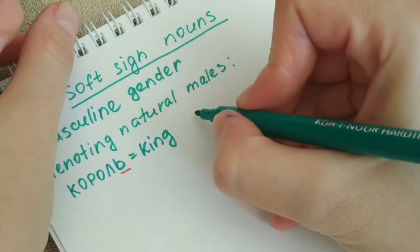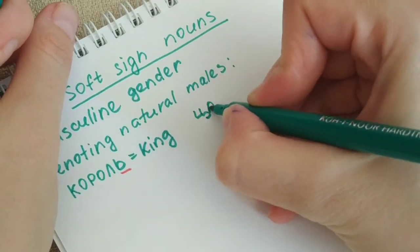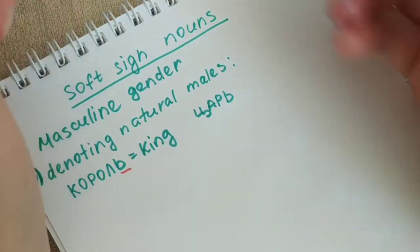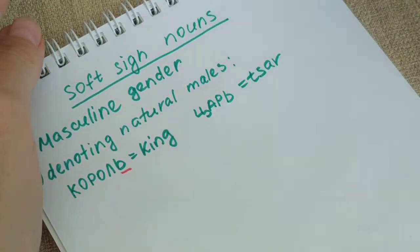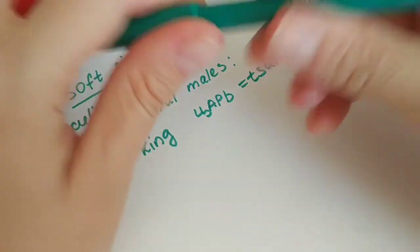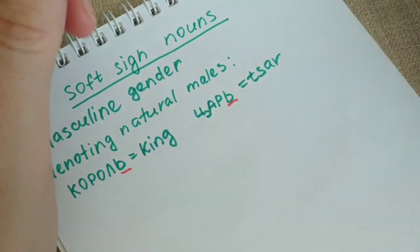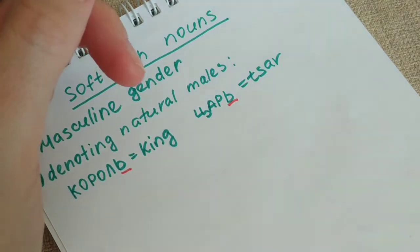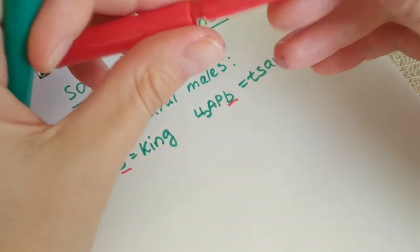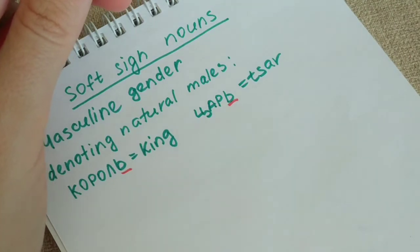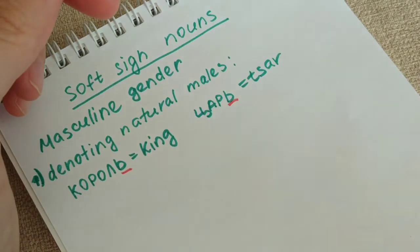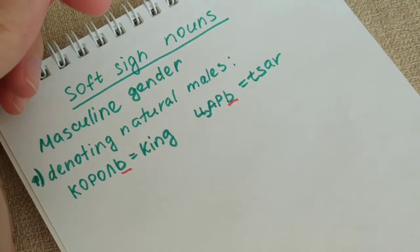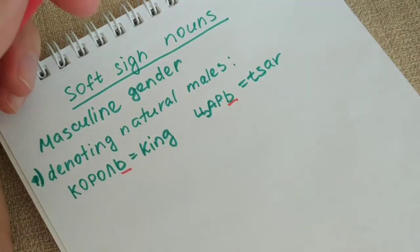Another example of a word you might know is царь. Царь means czar — the Russian version of a king. It is ending in the soft sign and it means a male, because czars in Russian were only men, so the word that names this type of ruler is of a masculine gender.